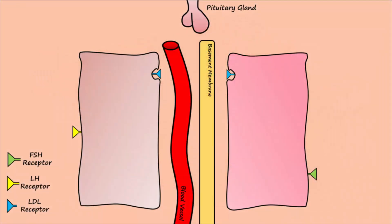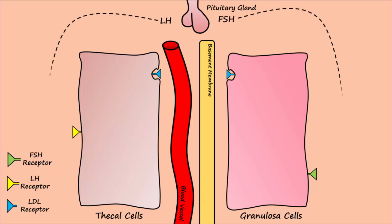Zooming in on the secondary follicle, we see the thecal and granulosa cells. These cells work together to make estrogen and progesterone. LH and FSH are released from the pituitary gland and activate thecal and granulosa cells.